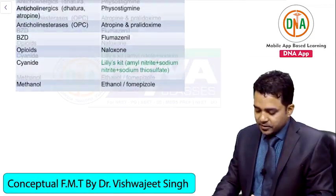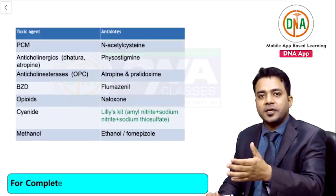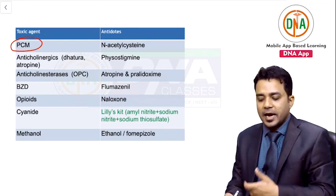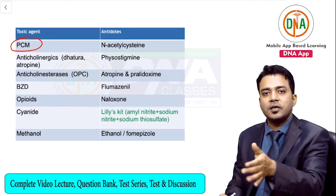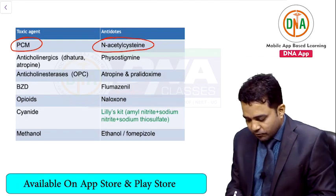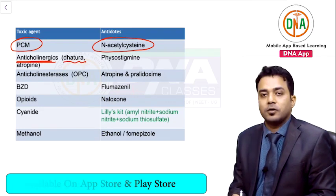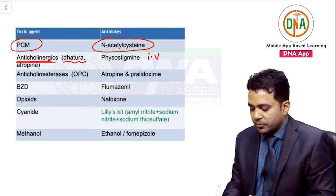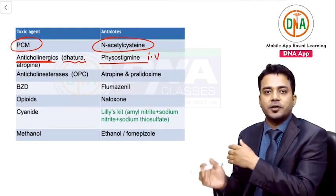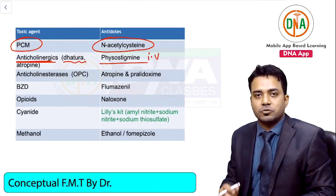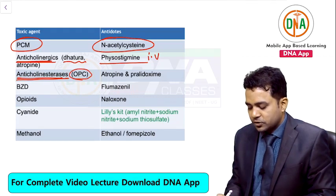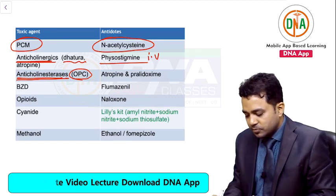Last table: antidotes of different poisonings. Paracetamol (PCM) has toxicity mainly on the liver — antidote is N-acetylcysteine. For anticholinergic poisoning like dhatura, antidote of choice is IV physostigmine, not neostigmine, because neostigmine does not cross the blood-brain barrier whereas physostigmine does. For anticholinesterase poisoning like organophosphorus compounds, antidote of choice is oximes like pralidoxime; treatment of choice is atropine.